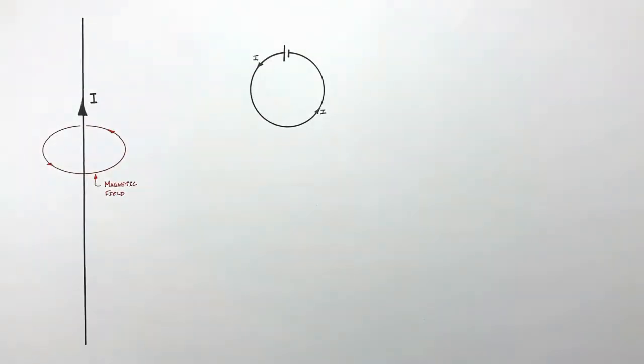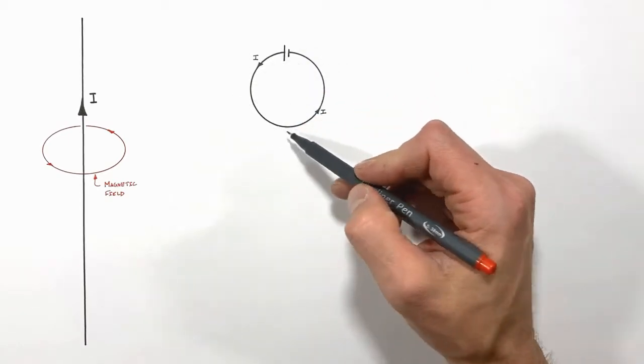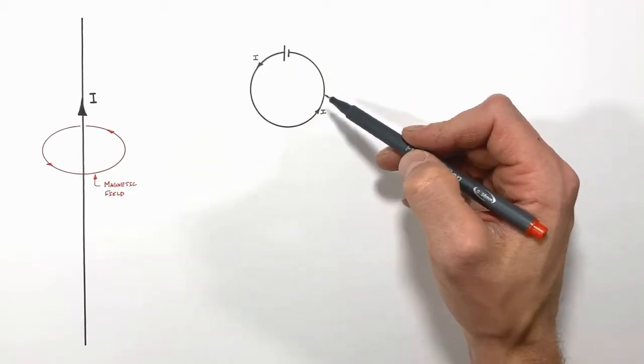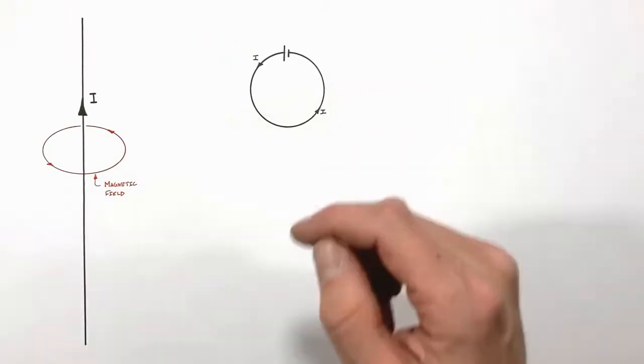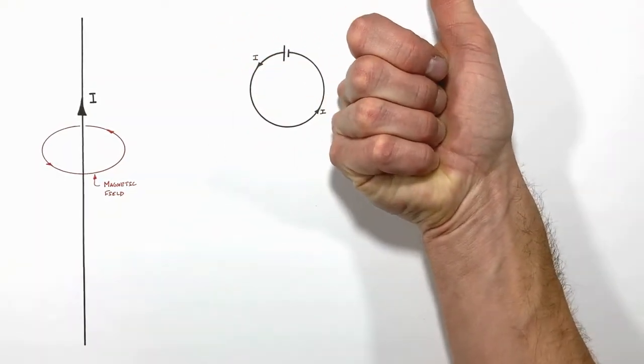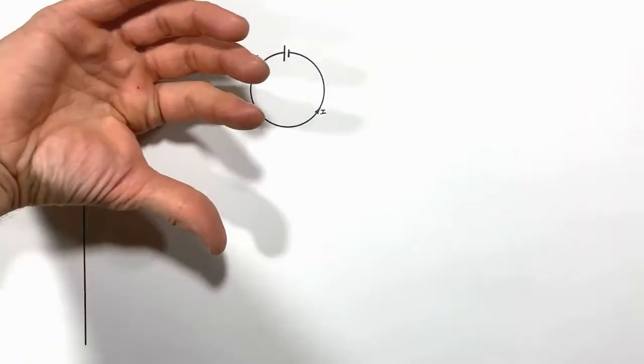What we see is that on the outside of this loop a magnetic field is formed into the page. Curling my fingers around, my fingers would be pointed into the page on the right-hand side of the loop and they would also be curled into the page on the left-hand side of the loop.